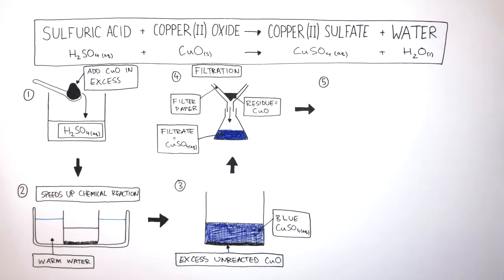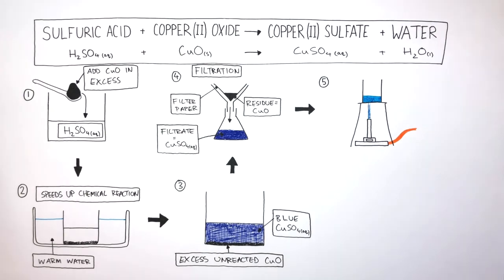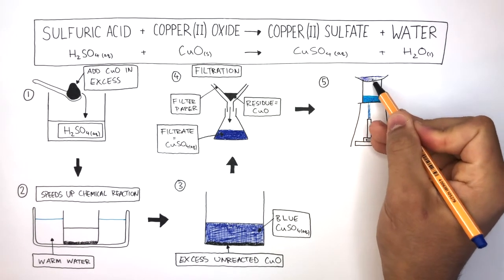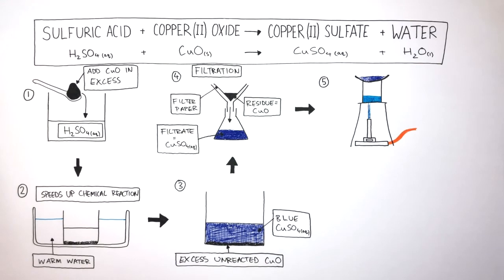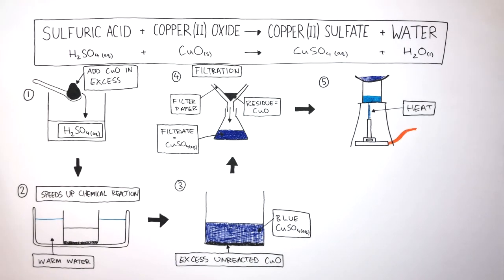In the next stage, we now need concentrated copper sulfate solution to form large copper sulfate crystals. To do this, we need to evaporate some water. The equipment needed is a Bunsen burner, tripod, gauze, a beaker with some water, and an evaporating dish which contains the copper sulfate solution. The Bunsen burner provides the heat, which speeds up the process of the water evaporating.